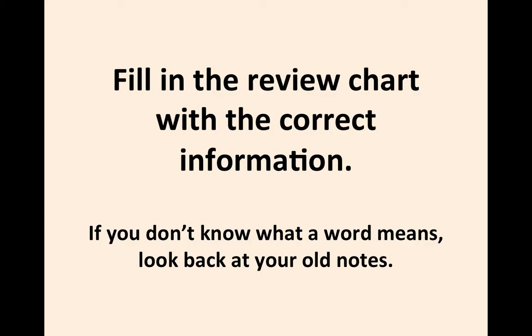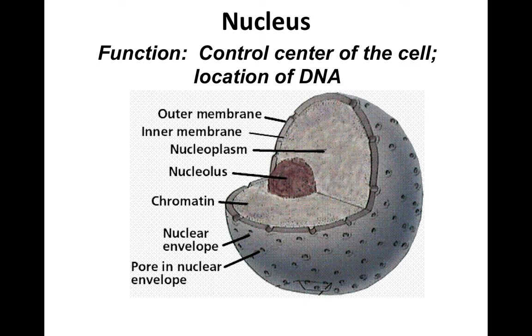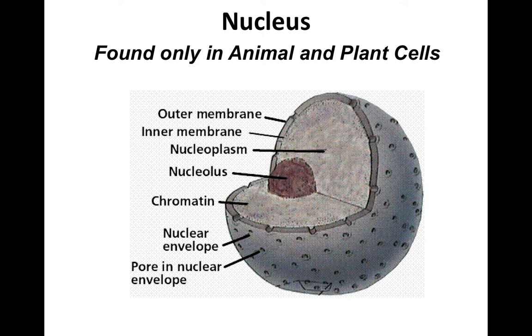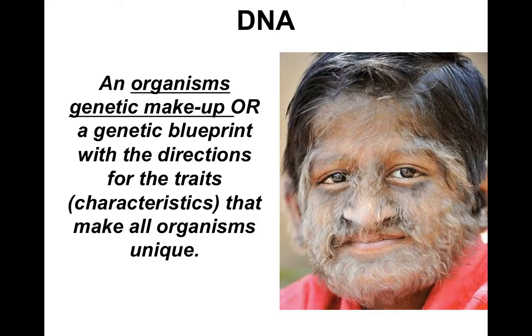Alright, let's review what these things do. First and foremost, the nucleus is the control center of the cell — this is where we're going to find the DNA. It's only going to be found in animal and plant cells, so you should have a check mark by animal and plant cells, not by prokaryotic.